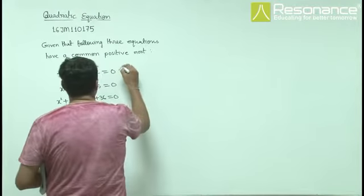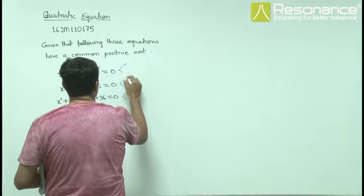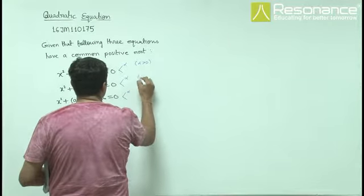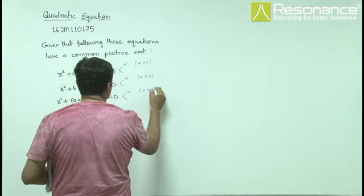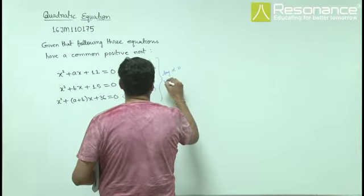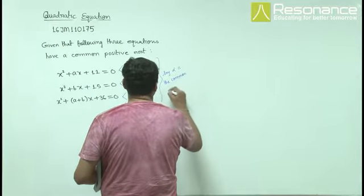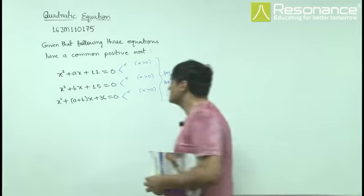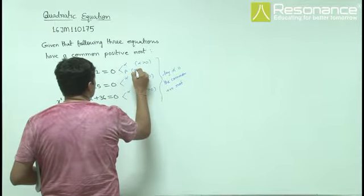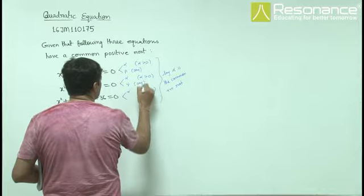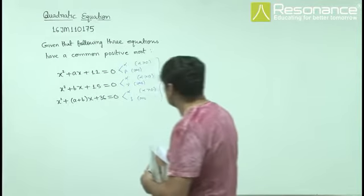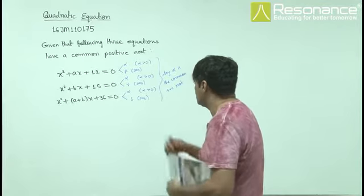Let us say that the common positive root is alpha. The other roots are beta, gamma, and delta. So alpha is the common positive root for all three equations.